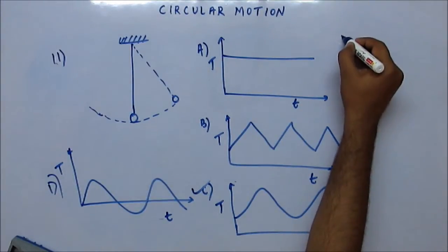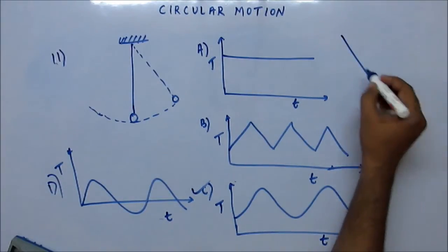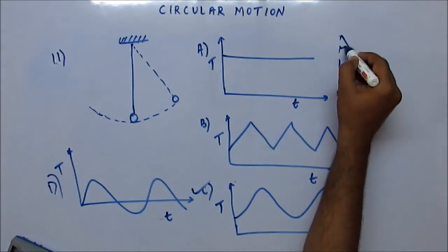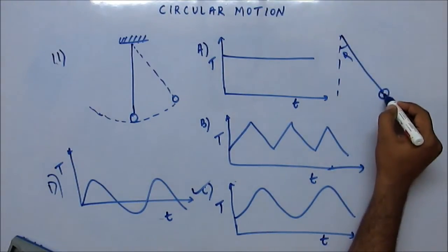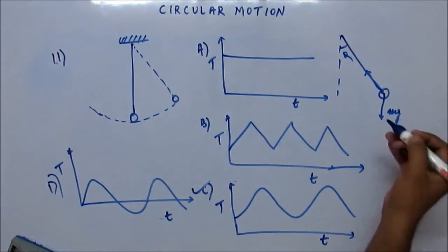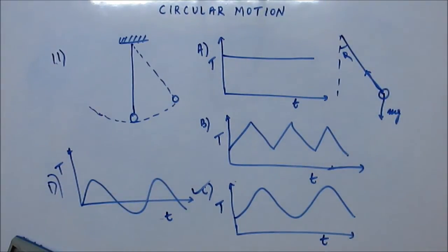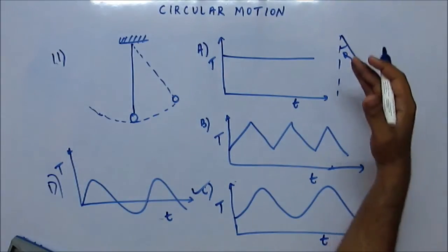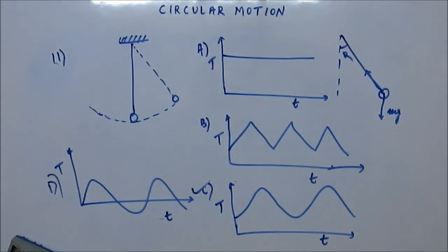I am drawing the FBD. When you draw the FBD at any position, suppose at any intermediate stage, this is angle theta. One force is tension and the other force is Mg. There is no third force on the bob. The bob is undergoing circular motion. That means the net force radially inward should be equal to Mv squared by R. This we have learned.